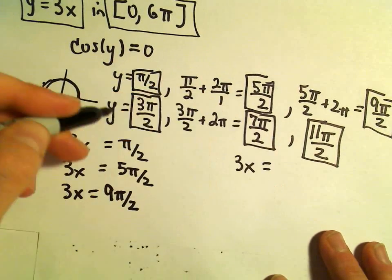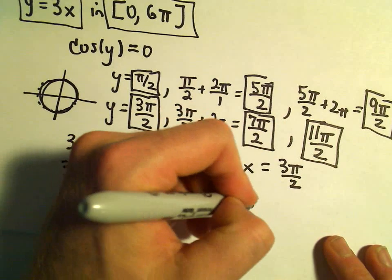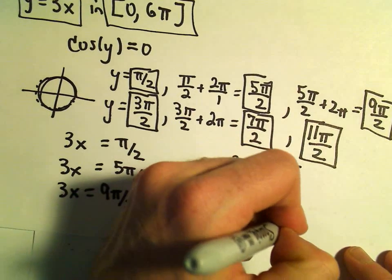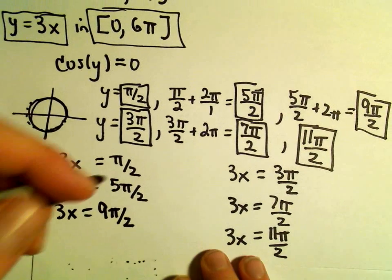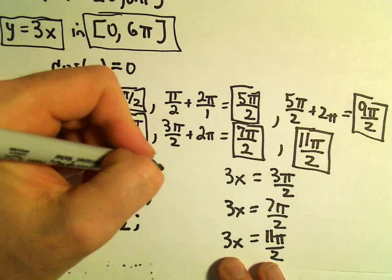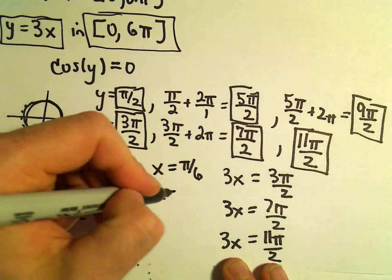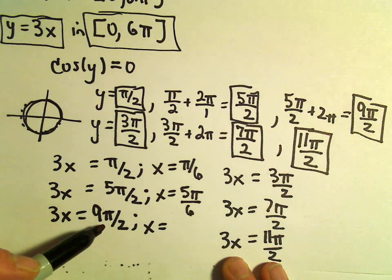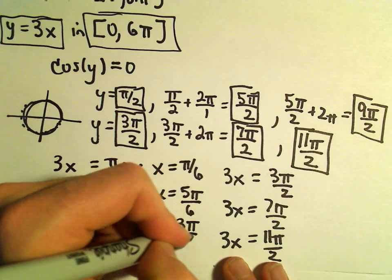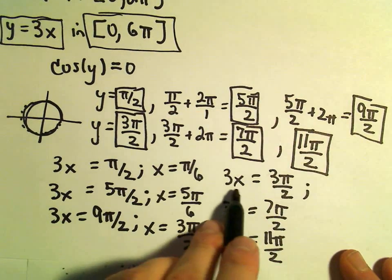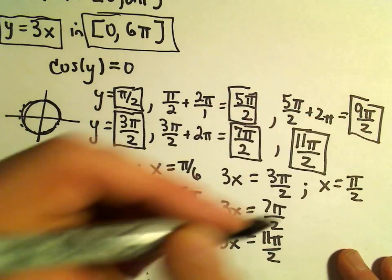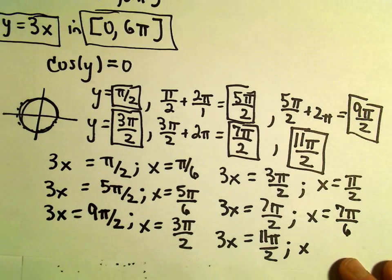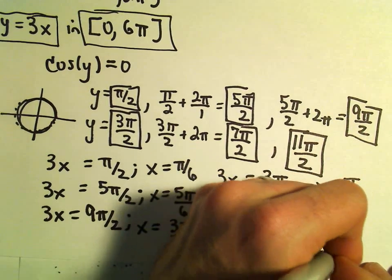Likewise, 3x could equal 3π/2, 3x could equal 7π/2, or 3x could equal 11π/2. But in each one of these cases, what I'm going to do is just simply multiply both sides by 1/3. So we would get x equals π/6 as a solution. We would get x equals 5π/6 as a solution. If we multiply both sides by 1/3, we'll get simply 3π/2. And if we do it one more time, we'll get x equals 11π/6.